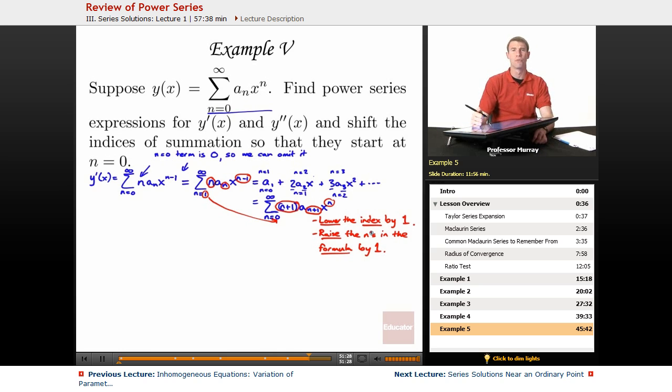That's going to be a really, really useful trick for us to use in the differential equations lecture next time. You really want to keep this in mind. If you lower the indices by 1, then you raise the n's in the formula by 1. And it works the other way, too. If you raise the indices by 1, then you lower the n's in the formula by 1. It's a way of adjusting the powers so that we can make different series be compatible with each other.